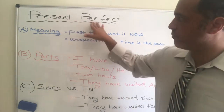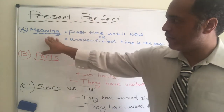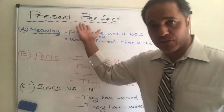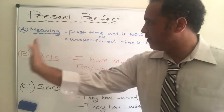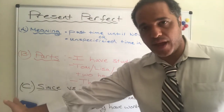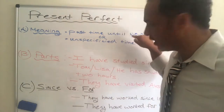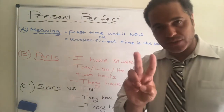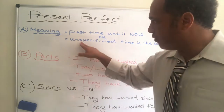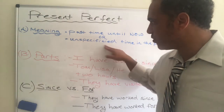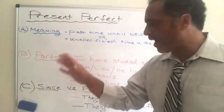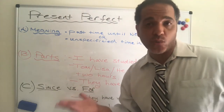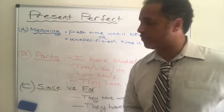Let's talk about present perfect first. The meaning: when we use this grammar tense, it usually means we started something in the past and it continues until now, until the present time. That's one reason. A second reason is when we are talking about a time in the past that is unspecified — we don't know exactly when it occurred, there's no specific time.